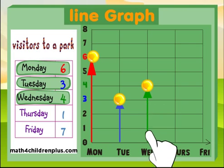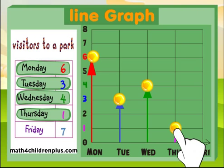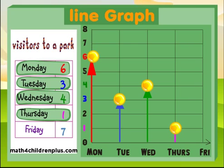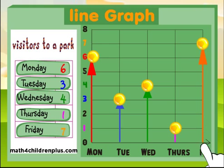On Wednesday, there were 4 visitors, so you put it — you guessed it — right where 4 and Wednesday meet. Then on Thursday, there was only 1 visitor — put it right there. And on Friday, there were 7 visitors, the most of all, so you put your marker where Friday and 7 meet.